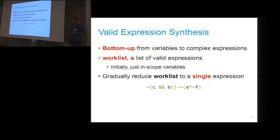Next, I would like to talk about how we address another challenge, how can we make sure that the generated code is well-defined. The key component is how to generate valid expressions. We propose a bottom-up approach. In our synthesis algorithm, we have a worklist which is basically a list of valid expressions. This is also the invariant of our synthesis algorithm. Initially, the worklist only contains in-scope variables. By definition, all these variables are well-defined. They should have no undefined behaviors. Gradually, we reduce the worklist to a single expression.